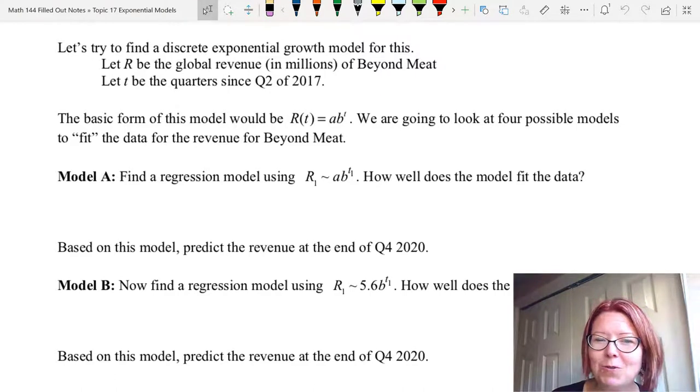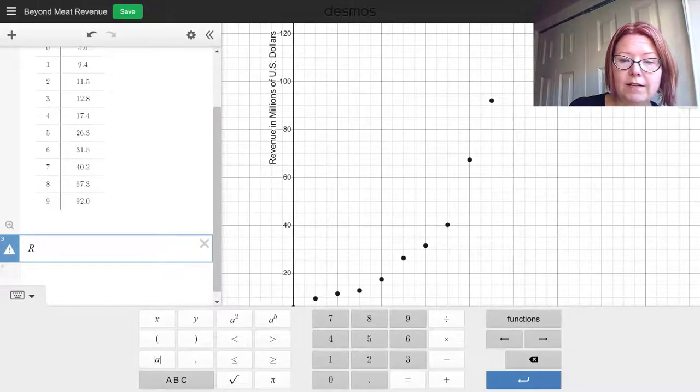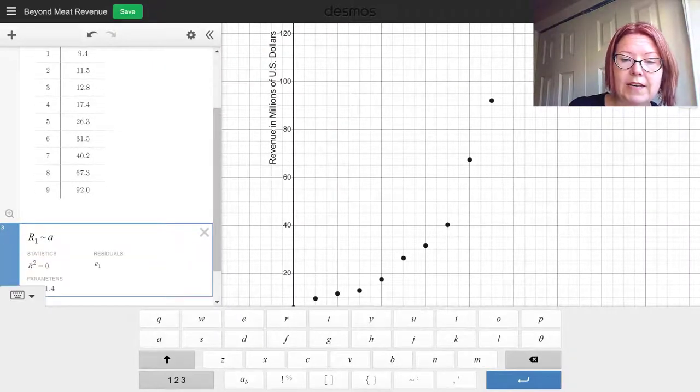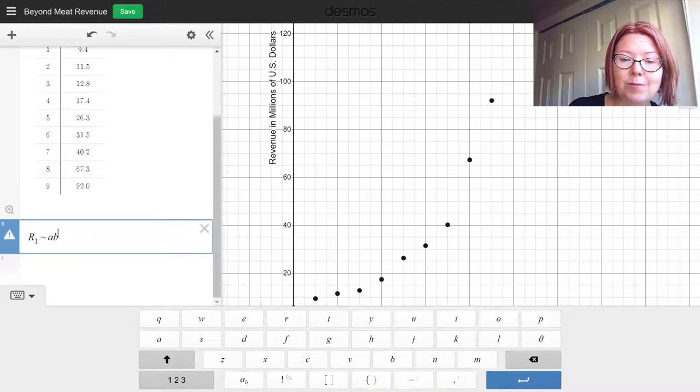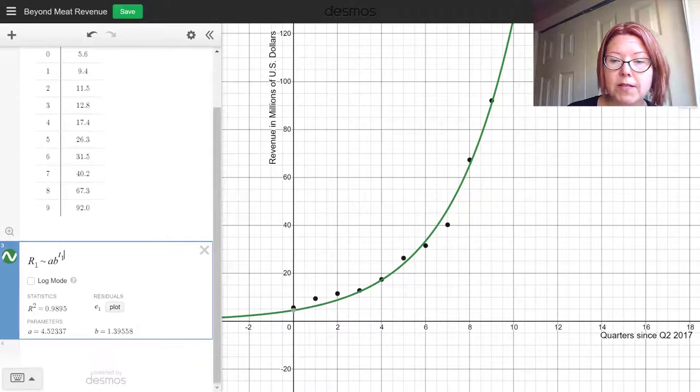For the first model, we'll call it model a. We want to find a regression for the model, letting both the initial value and the growth factor change. So our model would be r sub one tilde a b raised to the t sub one. Let's take a look. Capital R sub one tilda a b raised to the t sub one power. Okay, we immediately see a model appear on the screen.